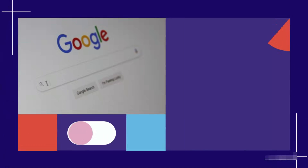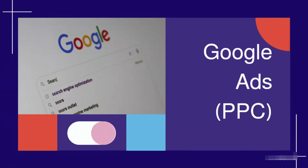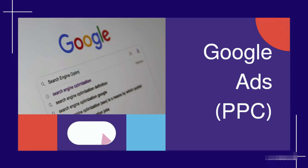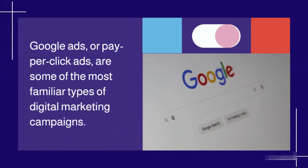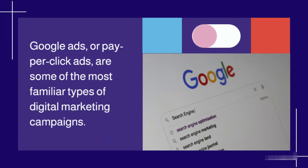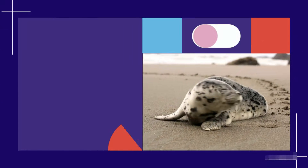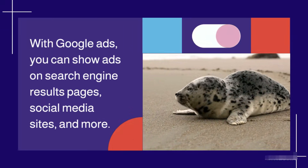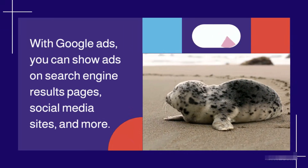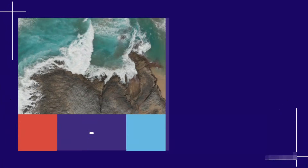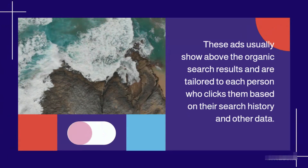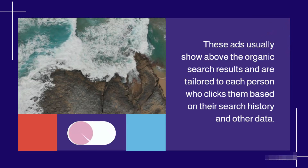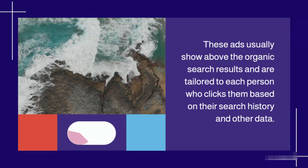Google Ads, or pay-per-click ads, are some of the most familiar types of digital marketing campaigns. With Google Ads you can show ads on search engine results pages, social media sites, and more. These ads usually show above the organic search results and are tailored to each person who clicks them based on their search history and other data.